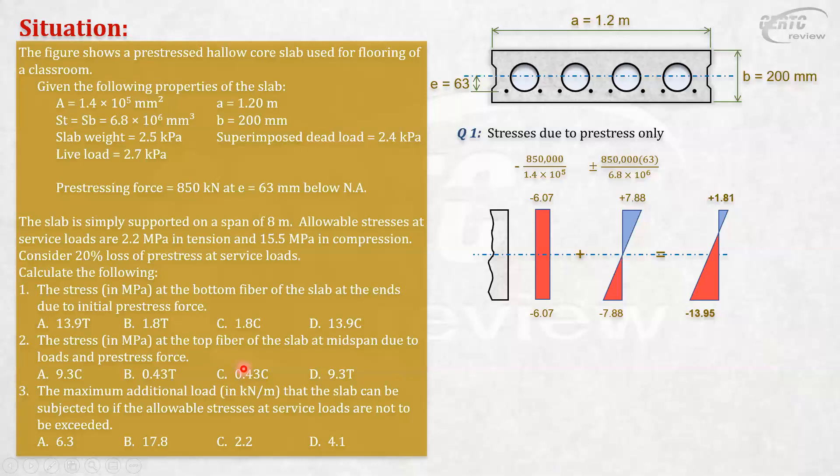What we will do first is get the loads on the slab. We are given those loads. The loads consist of everything in pressure: 2.5 kPa for the slab weight, the live load is 2.7, and for the superimposed load is 2.4 kPa. By the way, we will not apply load factors here because we are only computing allowable stresses.